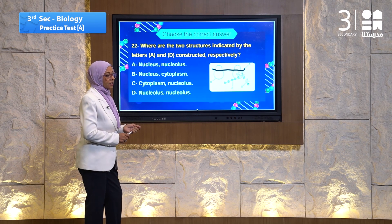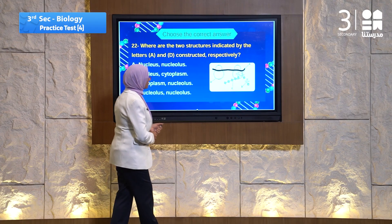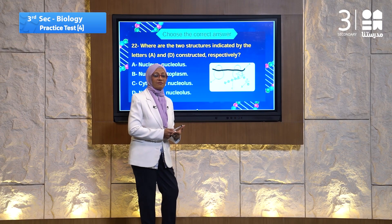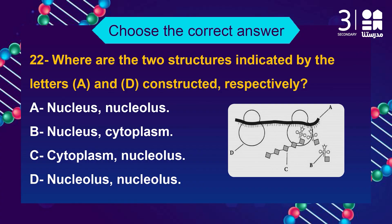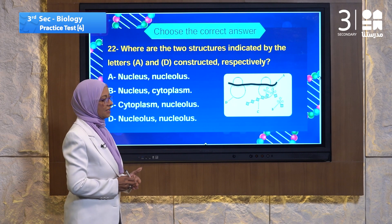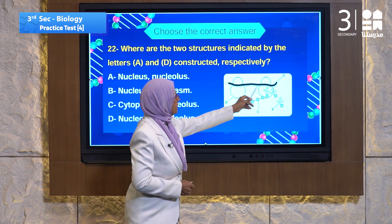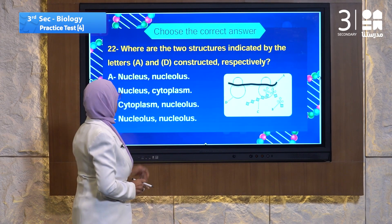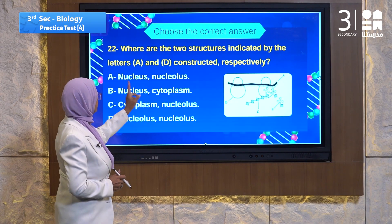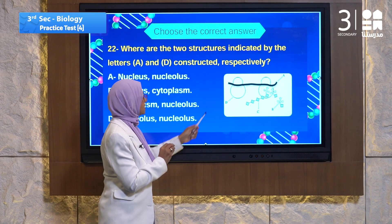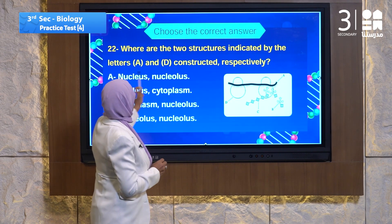Question 22. We have a figure about a type of RNA and another type. Where are they found? That's the question. Where are the two structures indicated by letters A and D constructed respectively? Constructed means formed or built. Number A and number D — nucleus and nucleolus. Structure A is constructed in the nucleus, and structure D is in the nucleolus.